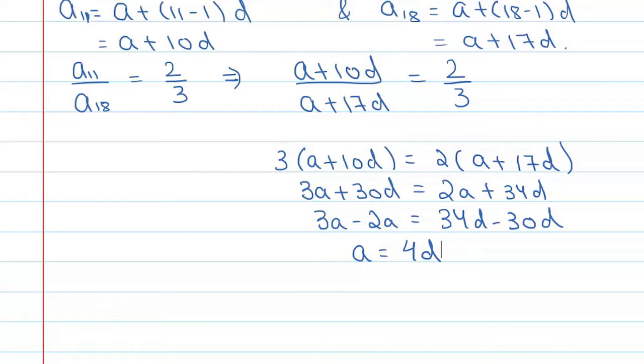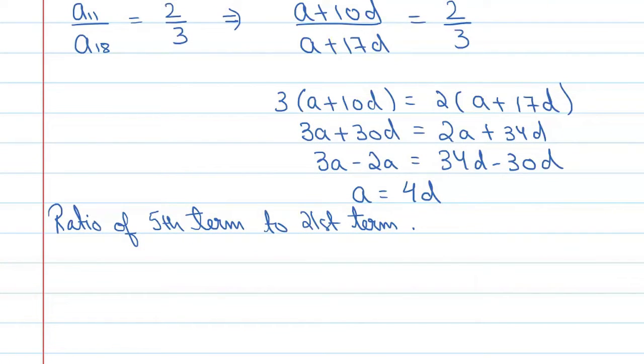So let's find the ratio of 5th term to 21st term. This value of 5th term, a_n is equal to a plus n minus 1 into d, so we can say a5 is equal to a plus 5 minus 1 into d, so this will become a plus 4d.